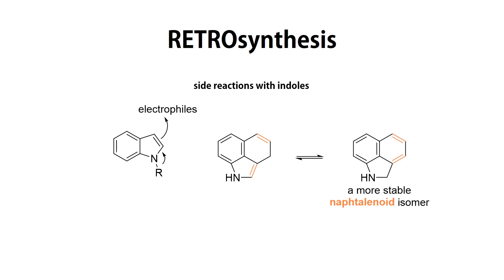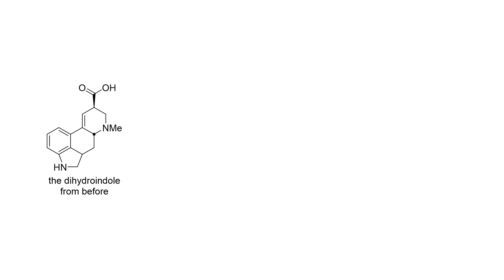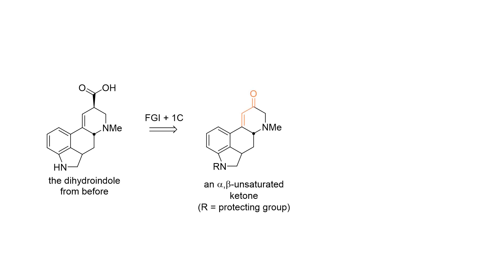To circumvent these problems, the team designed their synthesis with the dihydroindole moiety instead of a regular indole. If at any point you feel like you can't keep up, just pause the video to digest the structures and reactions. So now we've managed to simplify our problem by one single step. To save time, let's assume that the acid appended to the six-membered ring on top can be accessed from the corresponding cyclic ketone via regular functional group interconversions and a one-carbon homologation.